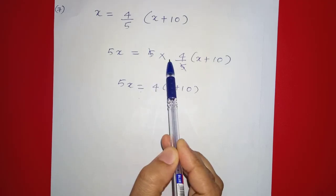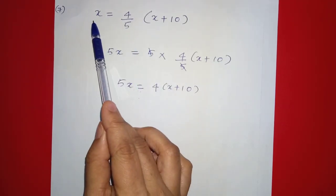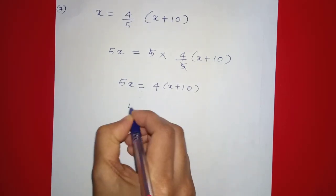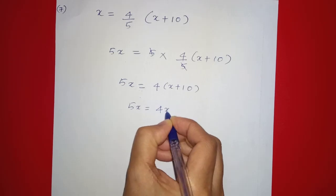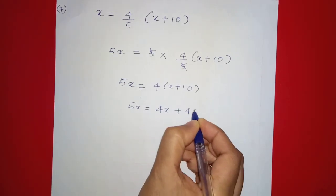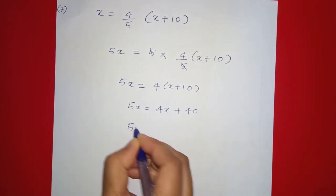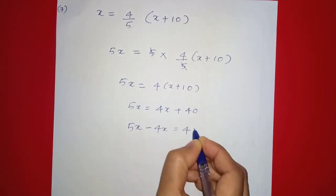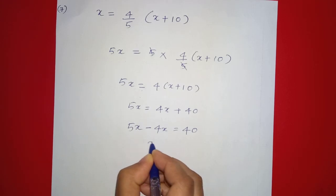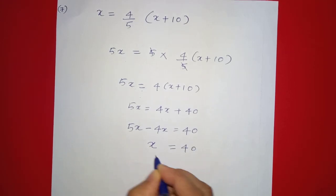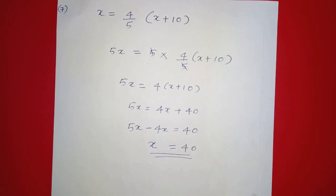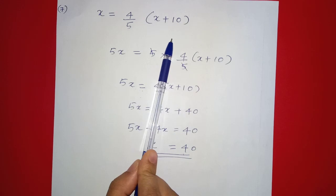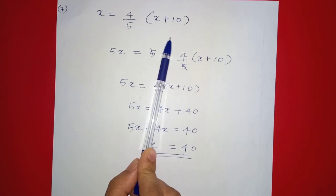We multiply out: 5x equals 4x plus 40. So 5x minus 4x equals 40, which gives x equals 40. We substitute x equals 40 into the equation and verify left-hand side equals right-hand side.